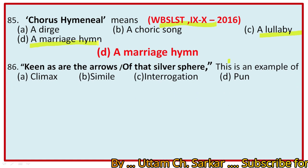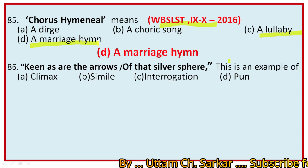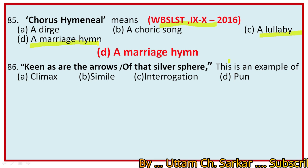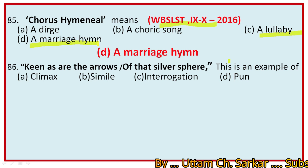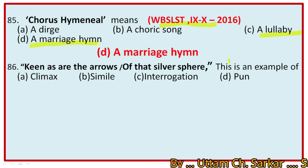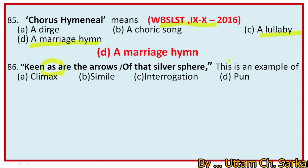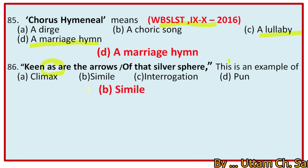Question 86: 'Keen as are the arrows of that silver sphere' — this is an example of: climax, simile, interrogation, or pun? Here the rays are compared to arrows, and the comparison is explicit due to the use of the word 'as.' So the right option is B, simile.